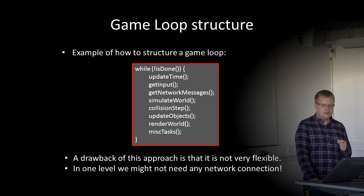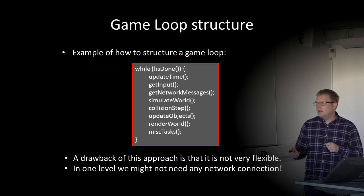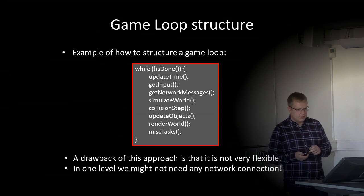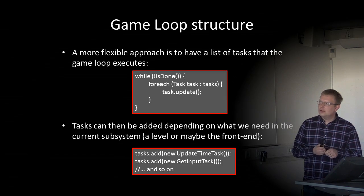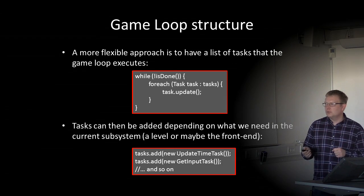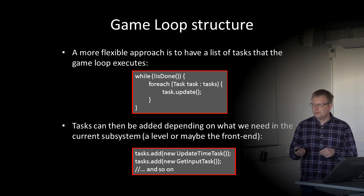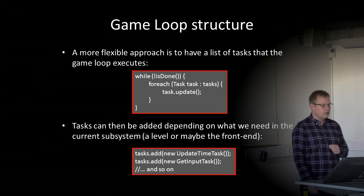The drawback of hard-coding steps in the game loop is that it is not very flexible — in one level, we might not need a network connection. A better approach is to make it modular: have a list of tasks that the game loop executes, and for each task call its update method. Tasks can be added depending on what is needed in the current subsystem, level, or front end. We can add a new update-time task, a new get-input task, and so on — only adding the tasks needed for the specific level.